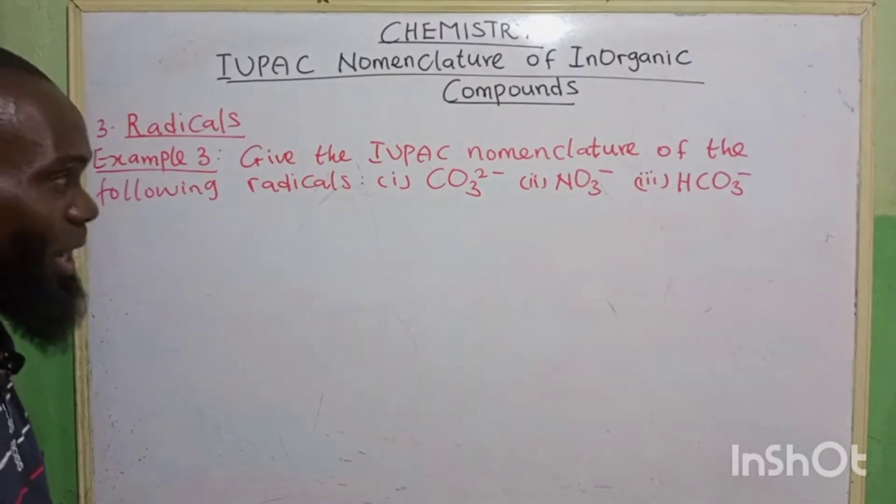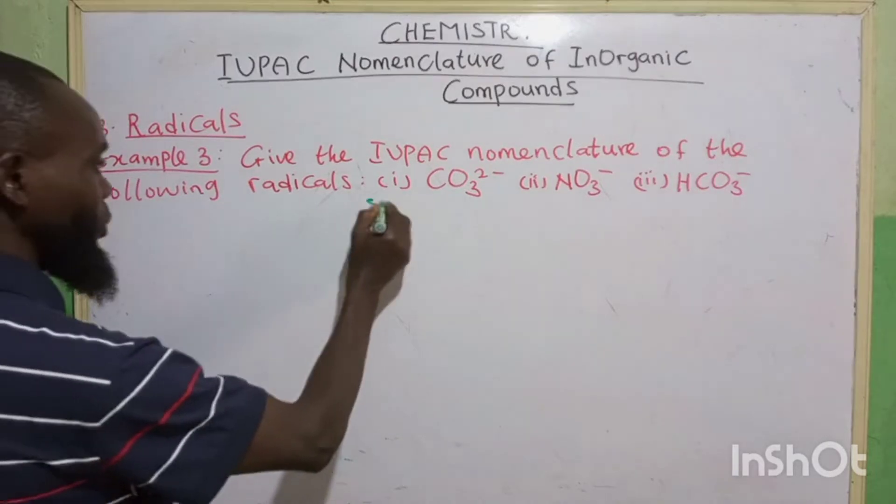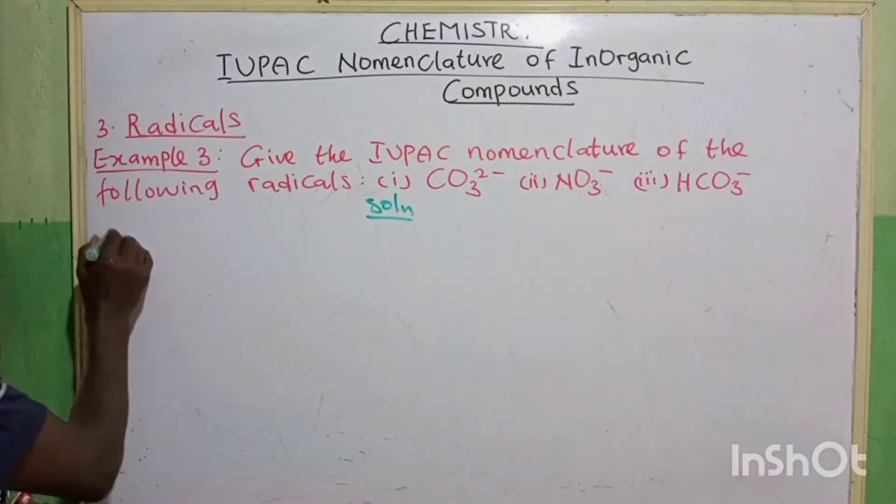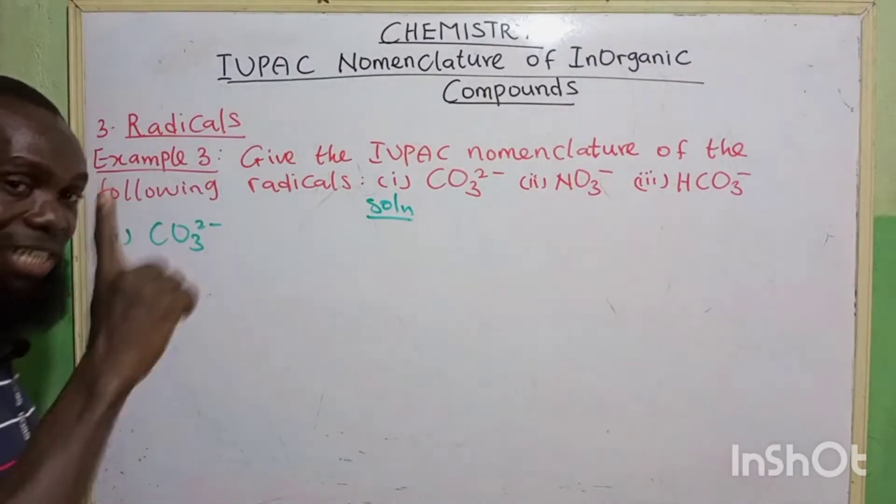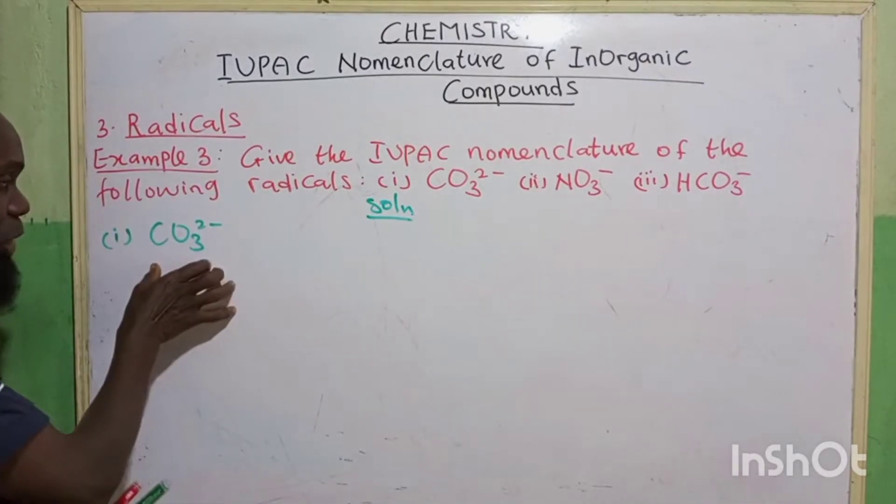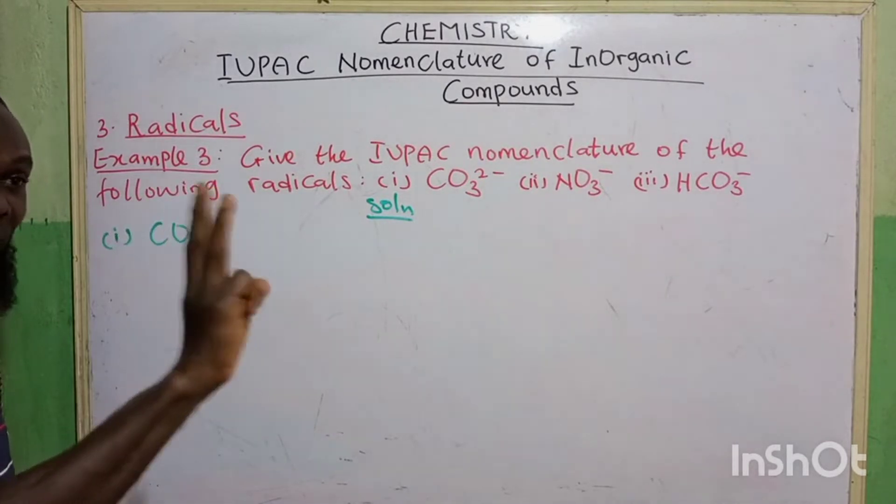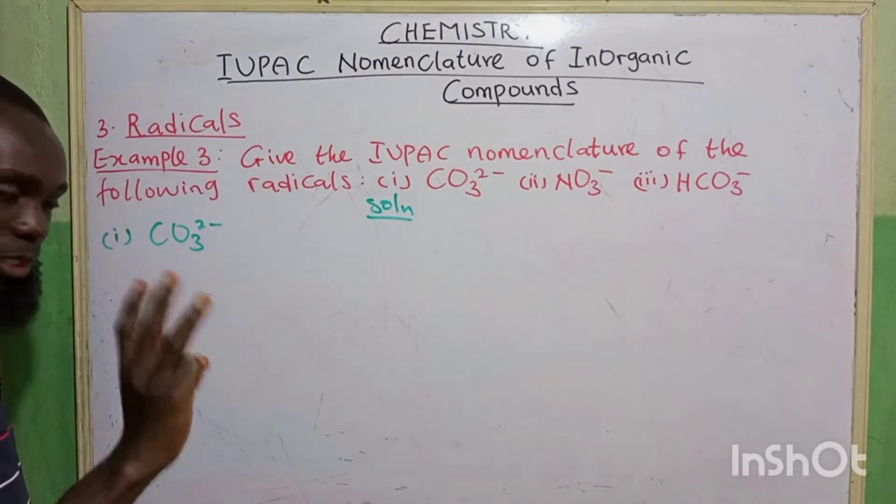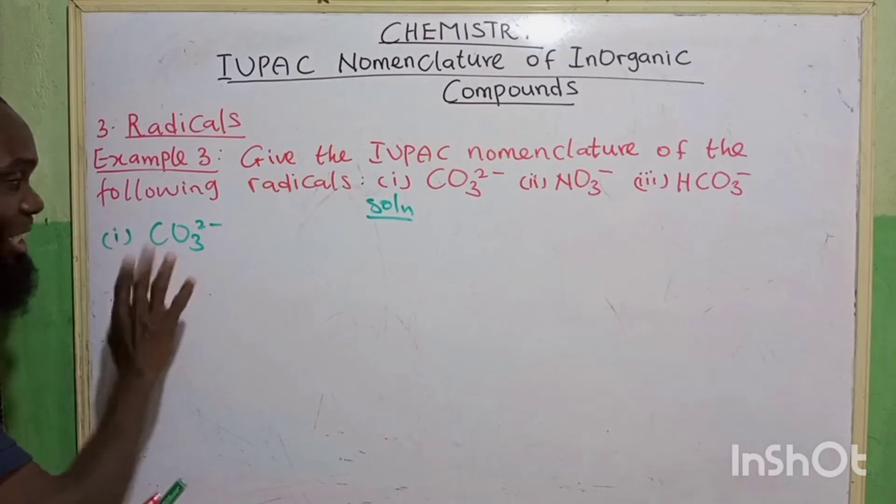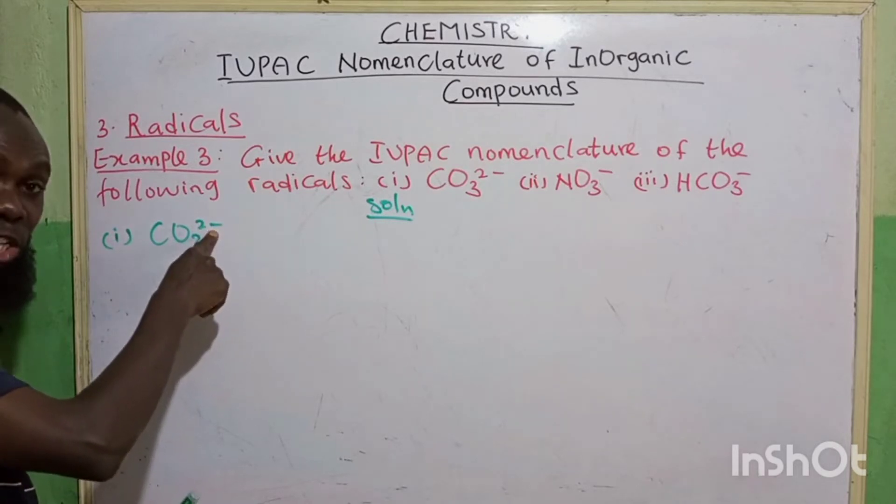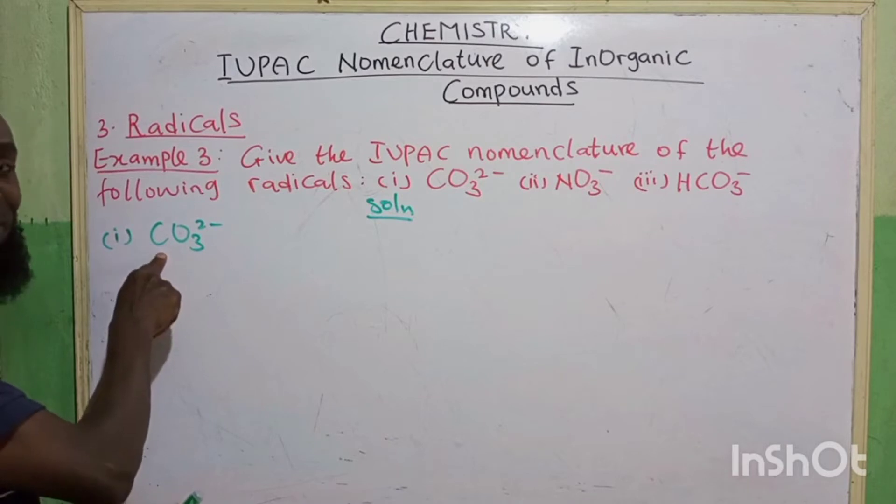Example 3: Give the IUPAC nomenclature of the following radicals. The first one, we have CO3 2-. Don't forget from our previous class, to get the IUPAC nomenclature of this, the center element is going to have an unknown letter. So we normally have three elements in a compound, but one element has been lost here. That is the reason why this is possessing a charge, which is 2-. So the element is supposed to be here. So carbon is still the center element.